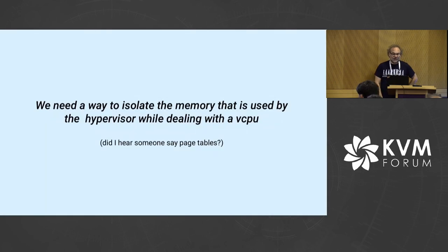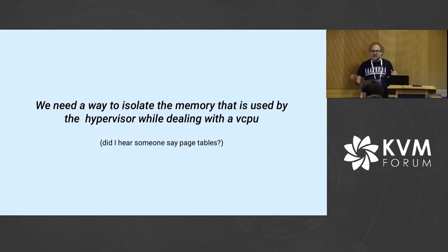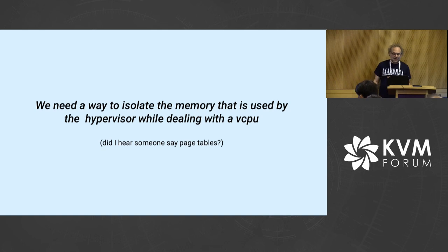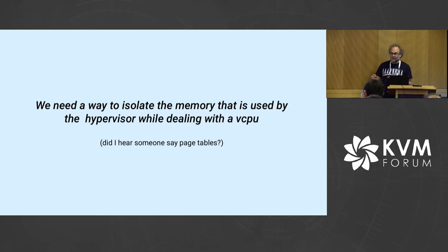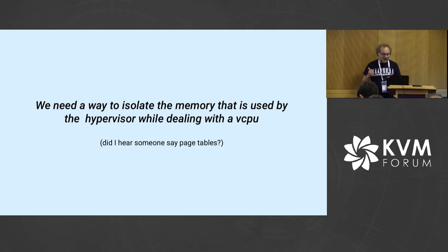So we need something else. Ideally, we need a way to isolate the memory that is used by the hypervisor whilst dealing with a vCPU. And if you haven't had enough of MMU talks yesterday — yes, this is about page tables.